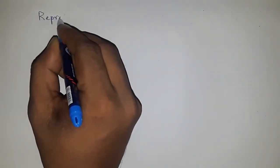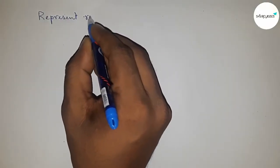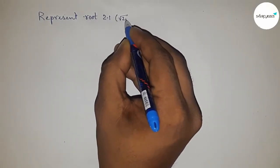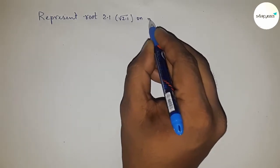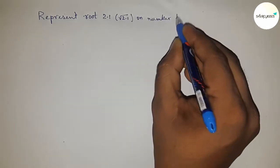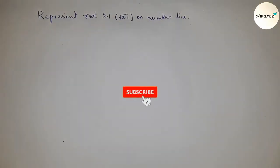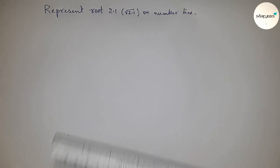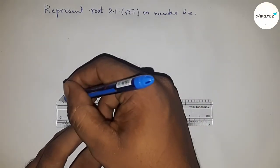Hi everyone, welcome to Accessory Classes. Today we're talking about the representation of root 2.1 on a number line. Before starting the video, as always, I have one request: please subscribe to the channel and press the bell icon.